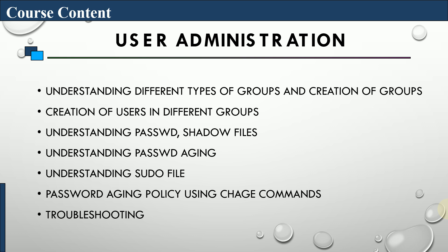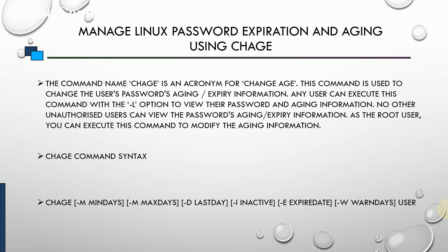In this lecture, we are going to understand the different commands which can be used to set the password aging or expiry information of a user. The command is chage, which is an acronym for 'change age'. This command is used to change the user's password expiry or aging information. Any user can execute this command with the -l option to view their password aging information, but only the root user can modify it.